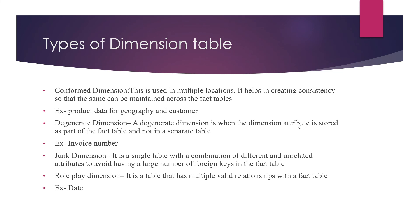Then we have role-playing dimensions. A role-playing dimension is a table that has multiple valid relationships with the fact table. For example, a date column can be a date of birth or a sales date for a product. These dates play different roles based on how you invoke them — a date can play the role of sales date, or it can become customer-related data when used as date of birth. That's why they are called role-playing dimensions.